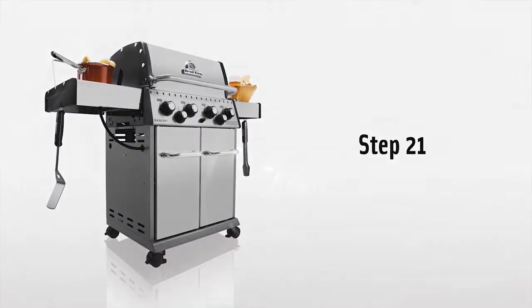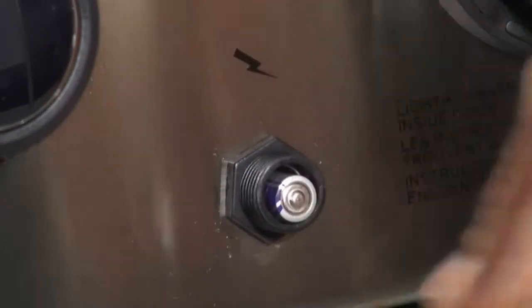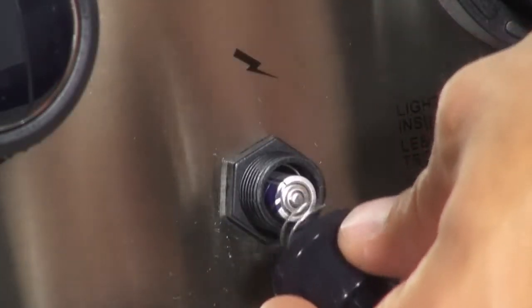Step 21. Install the battery to the igniter. Begin by unscrewing the igniter cap, installing the battery with a positive terminal out, and then replace the cap.